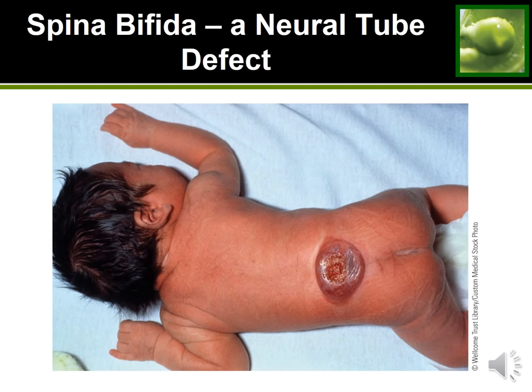There are two main types of neural tube defects: spina bifida, where the spinal cord doesn't fully close and nerves are exposed and vulnerable; and anencephaly, where the baby is born with only part of a brain or sometimes no brain at all. The image here shows spina bifida — the spinal cord is not fully developed or closed, leaving nerves in that area exposed and readily damaged.